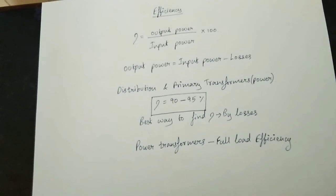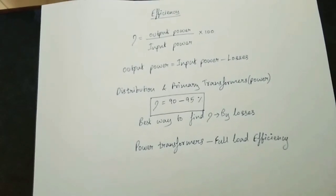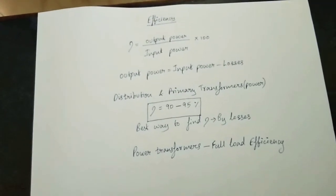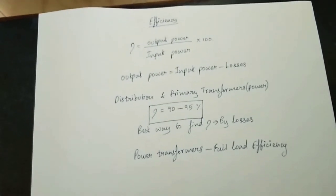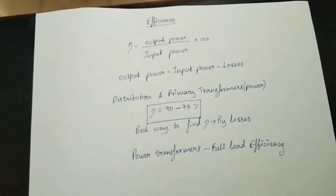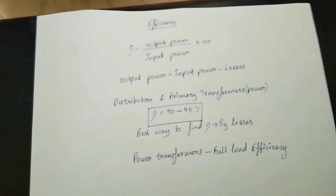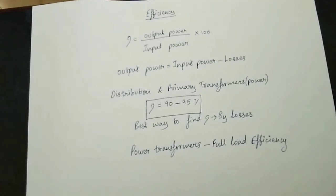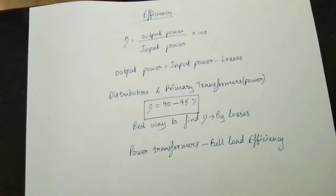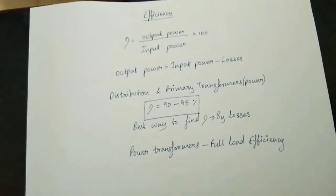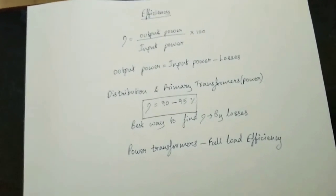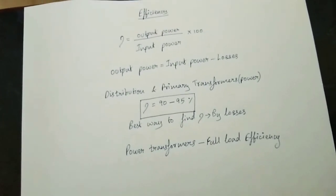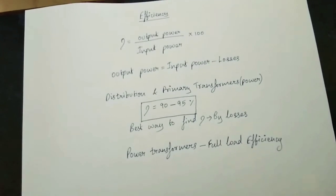The transformer is a basic issue in power systems. You will know that the power system structure involves a generating station, a power transformer for transmission, a primary transformer, a power transformer, and finally a consumer and distribution transformer.